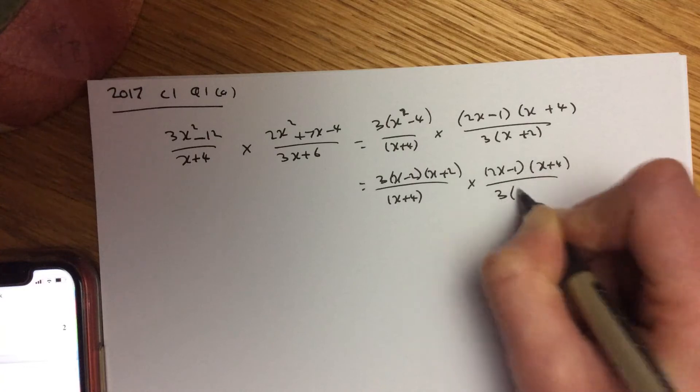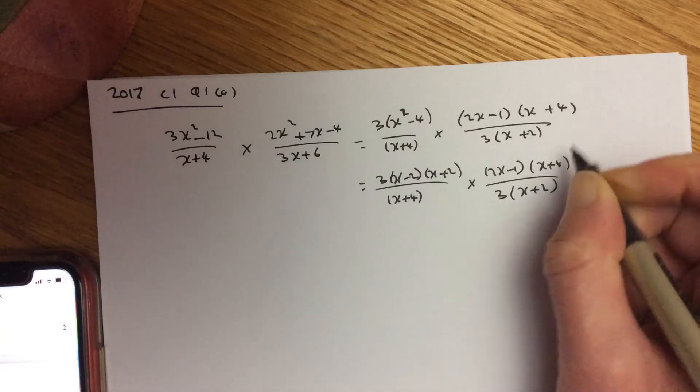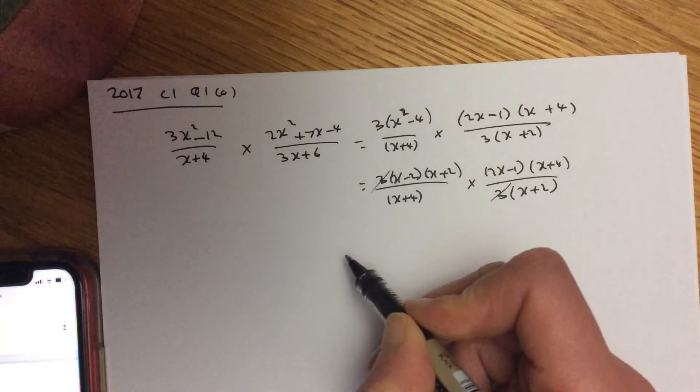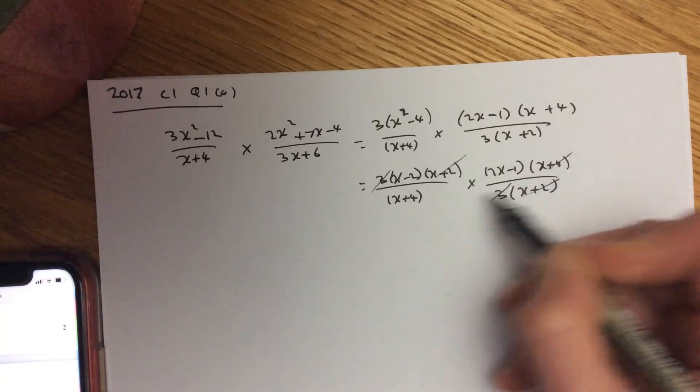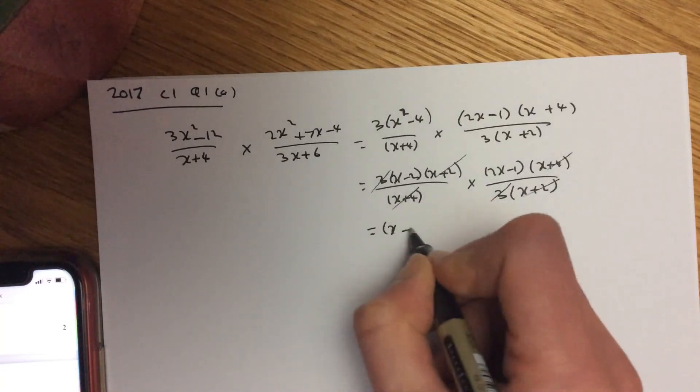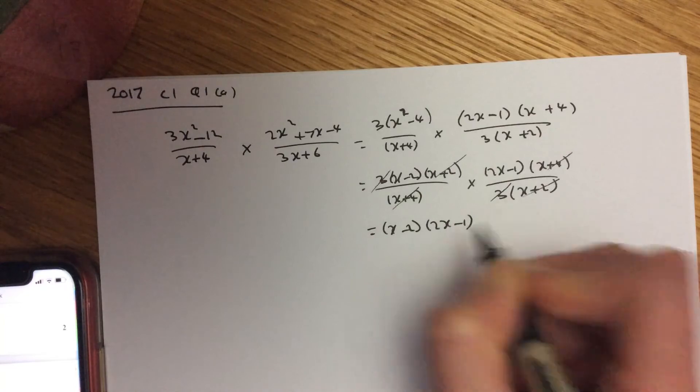x add 4 over 3x plus 2. And then just start cancelling off. Those 3's cancel, that full bracket cancels as does this one, leaving you x minus 2, 2x minus 1.